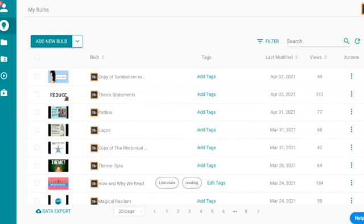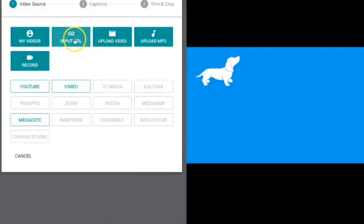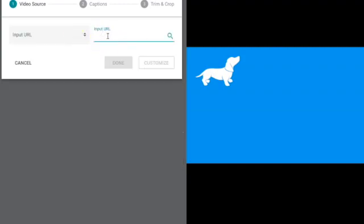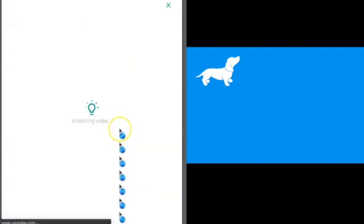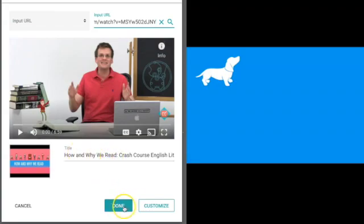Here we are in PlayPosit, and what they call bulbs are just the videos with added questions. So you can see I have a lot of them. There's 20 per page and I have eight pages. You can reuse them. But I'm going to show you how to add a new one. So I'm actually going to do an updated version of how and why we read. I click new bulb and I'm ready to get going. So I am going to input the URL, which I've already copied from YouTube. So I click here, paste. It'll show up to make sure that you have the right one. You can change the title if you want to, and then you can hit.